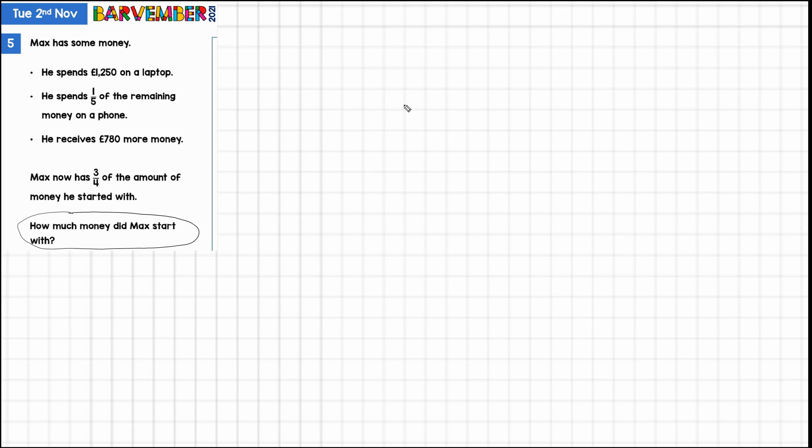He starts off with an amount of money. I suppose we could draw a bar for that. He spends £1,250 on a laptop, and then the remaining is split into fifths, and he spends one fifth on a phone. He then gets £780 more money, so that's money being added onto the bar, and that equals three quarters of the original amount. So what I think I'm going to do is start at the end, because I think I can see how to draw it if I start at the end, which you often find with the ones that look a bit tricky.